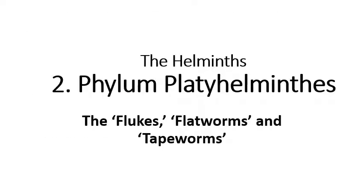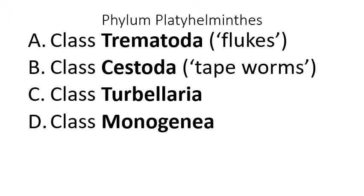Let's move on to the platyhelminths — the flukes and tapeworms. Within the platyhelminths, there are four classes: class Trematoda (flukes), class Cestoda (tapeworms), class Turbellaria, and class Monogenea. The Turbellaria and Monogenea are very common in aquatic and intertidal environments but are perfectly harmless to humans. So you should know that two classes are harmless and two contain members dangerous to humans — this could come up in a multiple choice question.